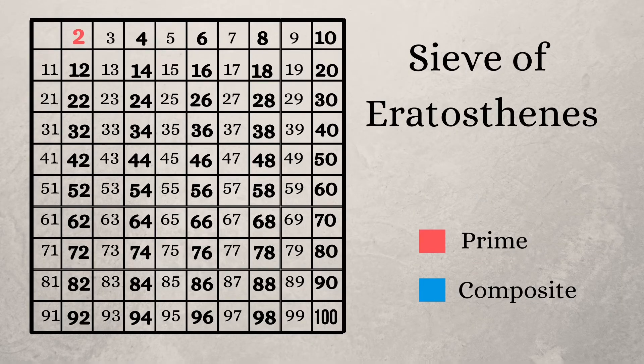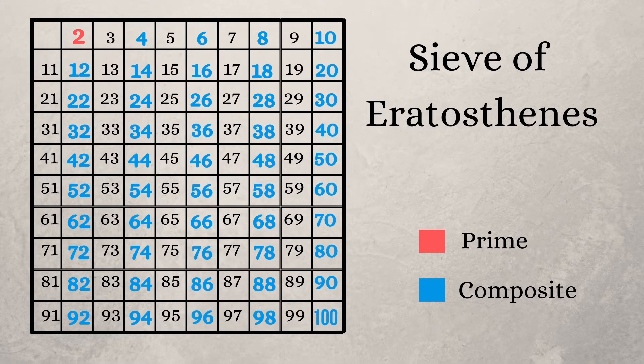All the other multiples of two have more than two factors. So now on the table we mark them as composite numbers.